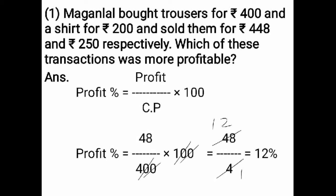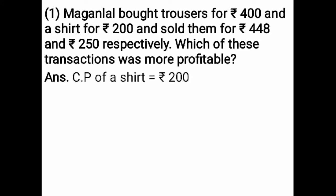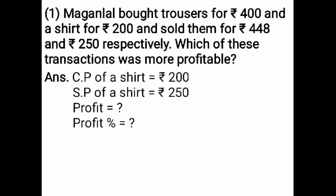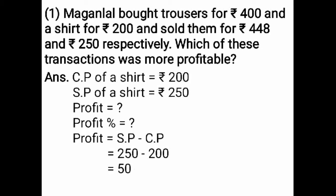Profit percent of trousers is 12%. Next, find the cost price and selling price of the shirt. Cost price of the shirt is Rs. 200 and selling price is Rs. 250. The formula for profit is selling price minus cost price: 250 minus 200. Subtracting from the units place: 0 minus 0 is 0, 5 minus 0 is 5, 2 minus 2 is 0. That equals Rs. 50. Therefore, profit is equal to Rs. 50.